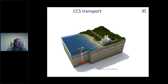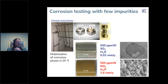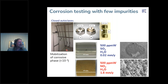We started by drawing on experience from the oil and gas industry using closed autoclave systems. We injected impurities into a rotating cage to mobilize the CO2 and corrosive phases. We found that for carbon steel, especially nitrogen dioxide was very corrosive — up to 1.6 mm per year at fairly high NO2 levels with some water. Sulfur dioxide showed a very low corrosion rate.